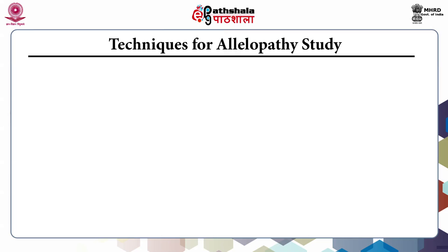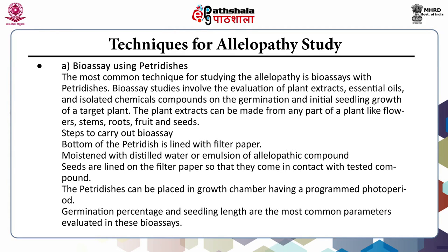Different techniques for allelopathy study: first, allelopathic study can be carried out under in vitro conditions using petri dishes. Bioassay studies involve evaluation of plant extracts, essential oils and isolated chemical compounds on the germination and initial seedling growth of a target plant. The plant extract can be made from any plant part including flower, stem, roots, fruit and seeds. Steps include: lining the bottom of a petri dish with filter paper, moistening it with distilled water, placing seeds on the filter paper, keeping petri dishes in a growth chamber with programmed photoperiod, and on the seventh day of germination, evaluating germination percentage and seedling length.